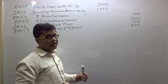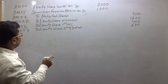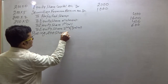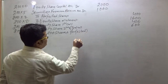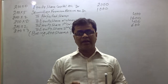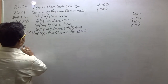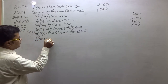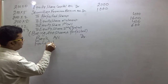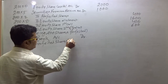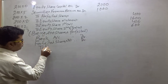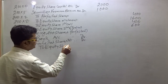The company forfeited 200 shares. Out of these, the company reissued 125 shares. The journal entry for reissue is: Bank Account debit, Forfeited Shares Account debit — to Equity Share Capital.